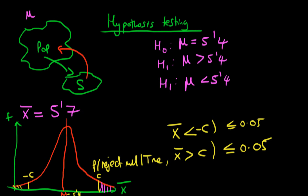We choose 5% because a 1-in-20 chance is quite unlikely. So it's quite unlikely, if the null hypothesis is true, that we would have actually got a value of x-bar that was less than or equal to minus c. This is again an example of a one-tailed test, because we're just looking at one tail of the distribution.